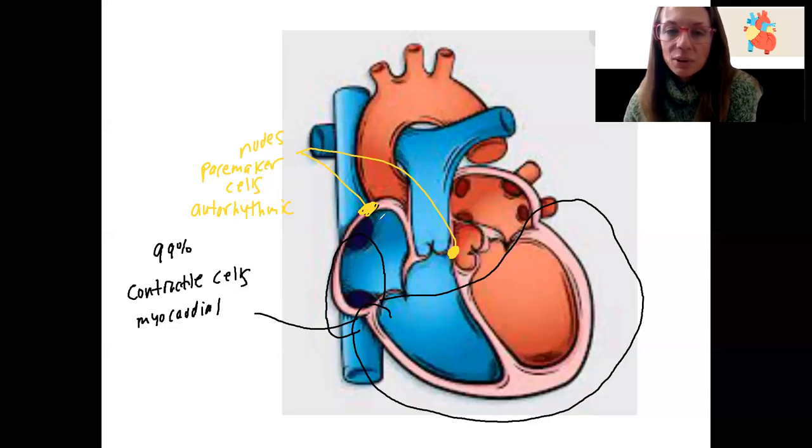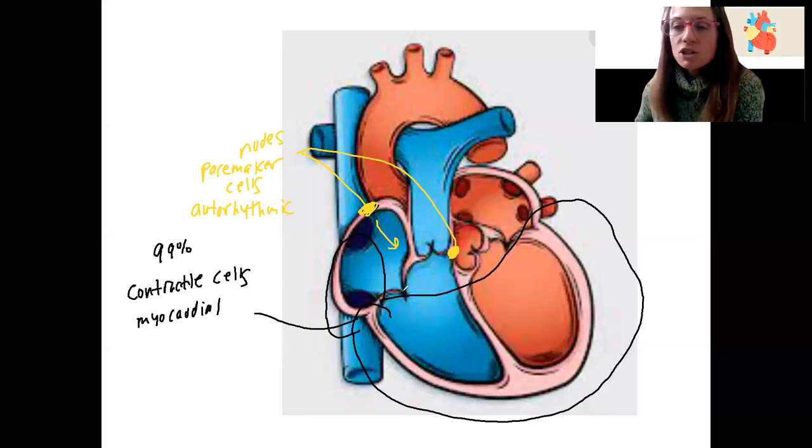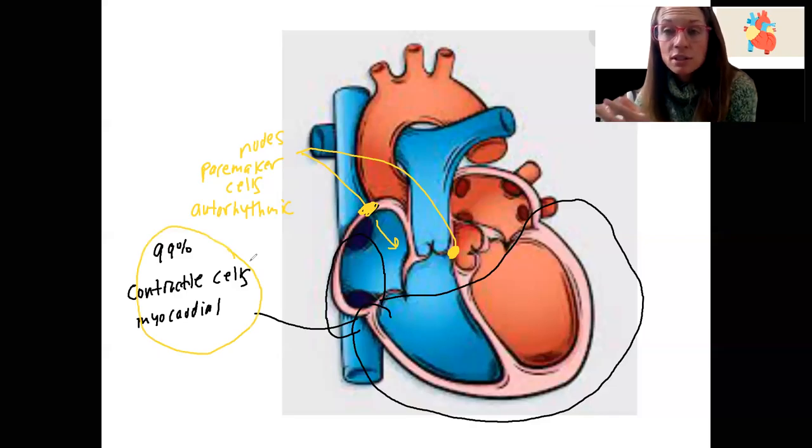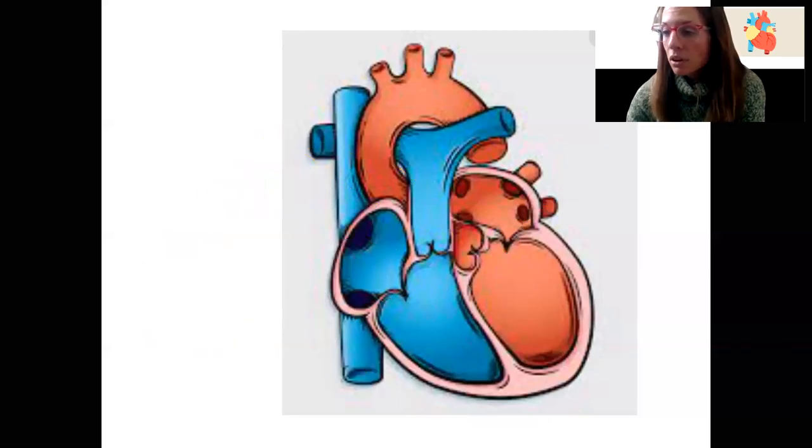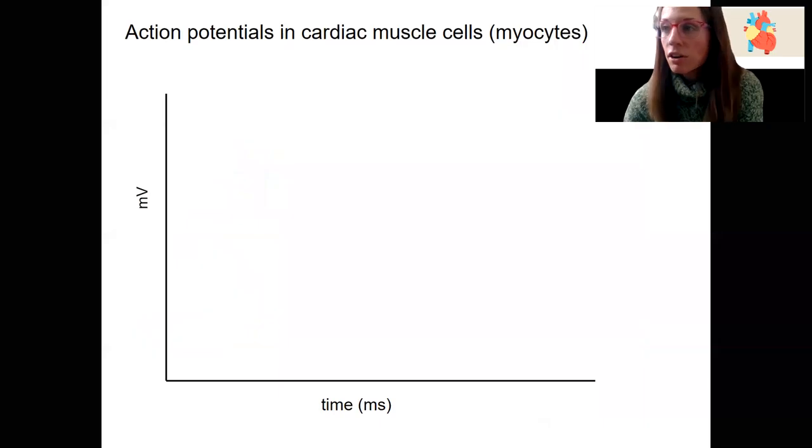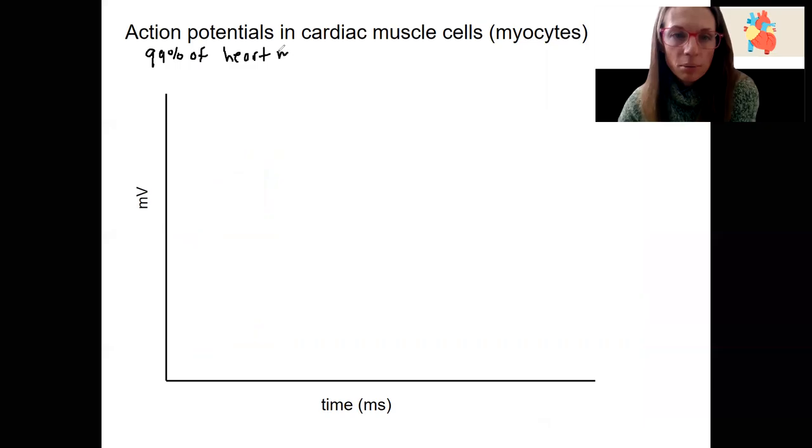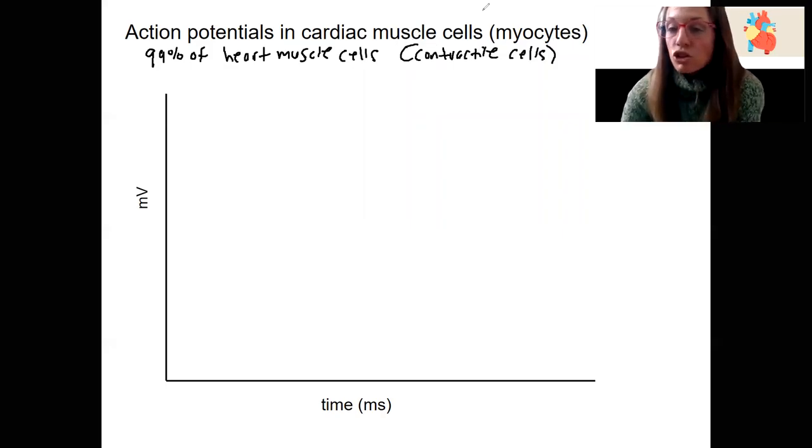These cells are going to tell the rest of the heart, initiate contraction for the rest of the heart. So let's start with these ones because they're a little more relevant to compare to skeletal muscle, which we just talked about action potentials and those refractory periods in skeletal muscle. So starting with the myocytes, this is our cardiac muscle cell, our contractile cells. Just remind us this is 99% of the cardiac, of the heart muscle, cardiac muscle cells. They're also called contractile cells because they're the ones that contract.